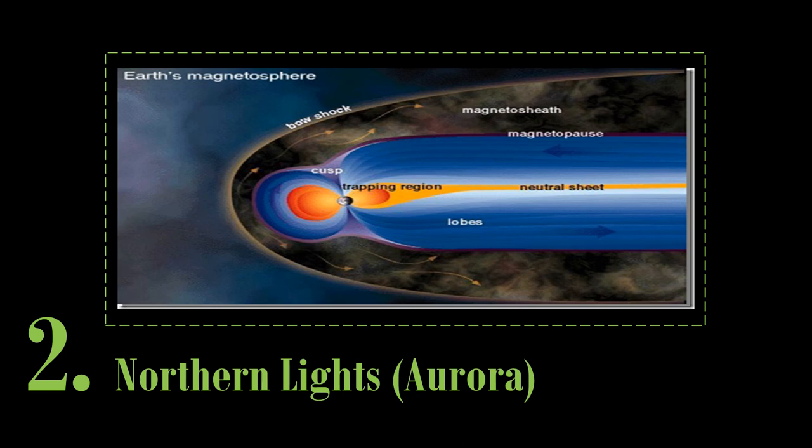Second, when solar charged particles hit the Earth's magnetic field, the particles will spiral along with Earth's magnetic field and create the beautiful northern light aurora borealis.